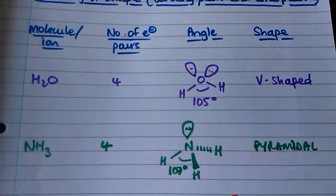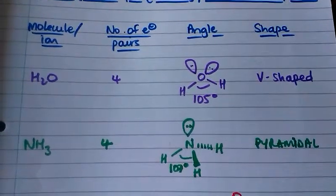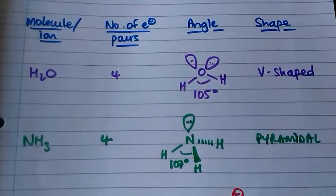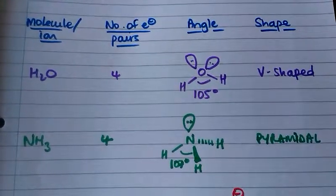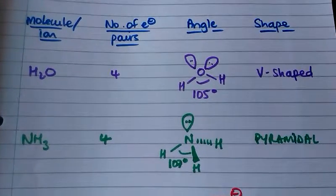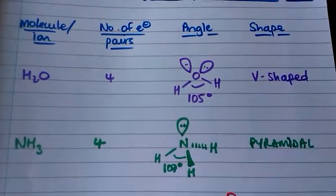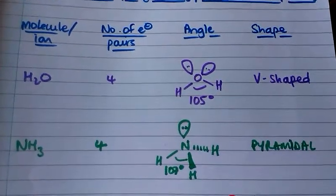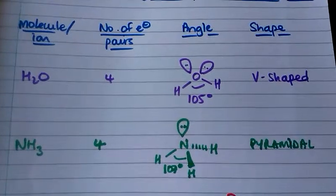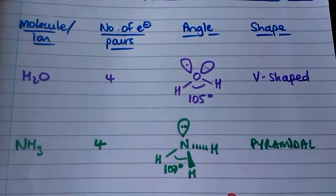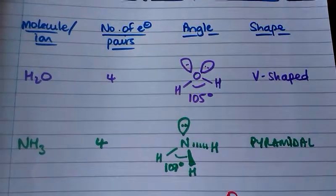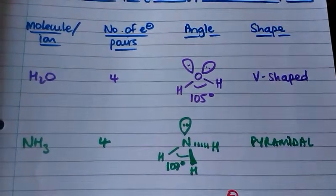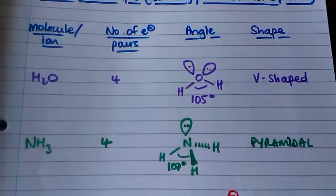Next we've got ammonia, which also has four pairs of electrons. Three of these are bonding pairs, one of them is a lone pair, and that bond angle is 107 degrees and the shape is called pyramidal.